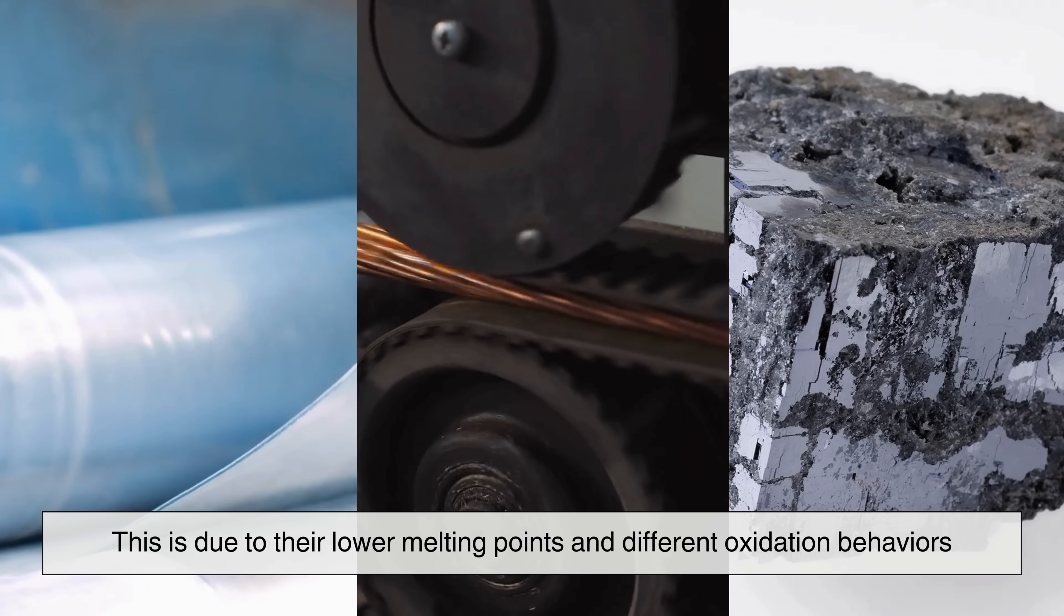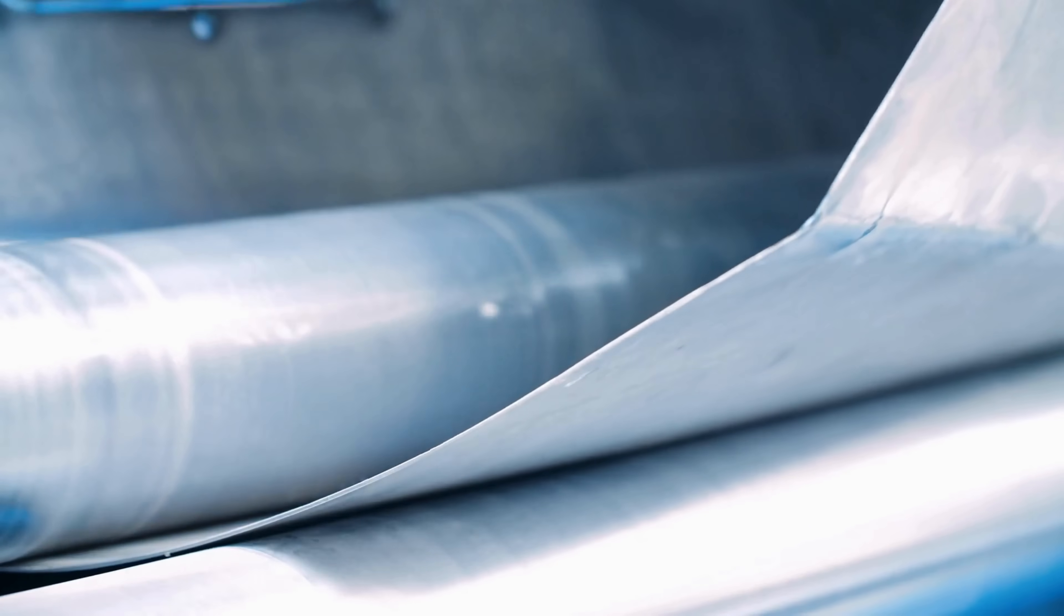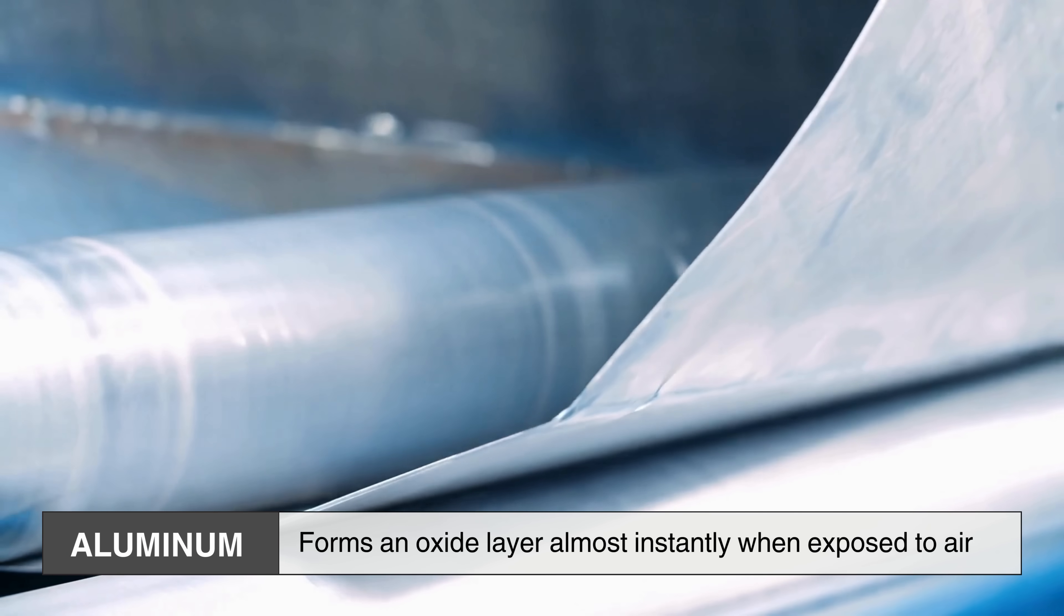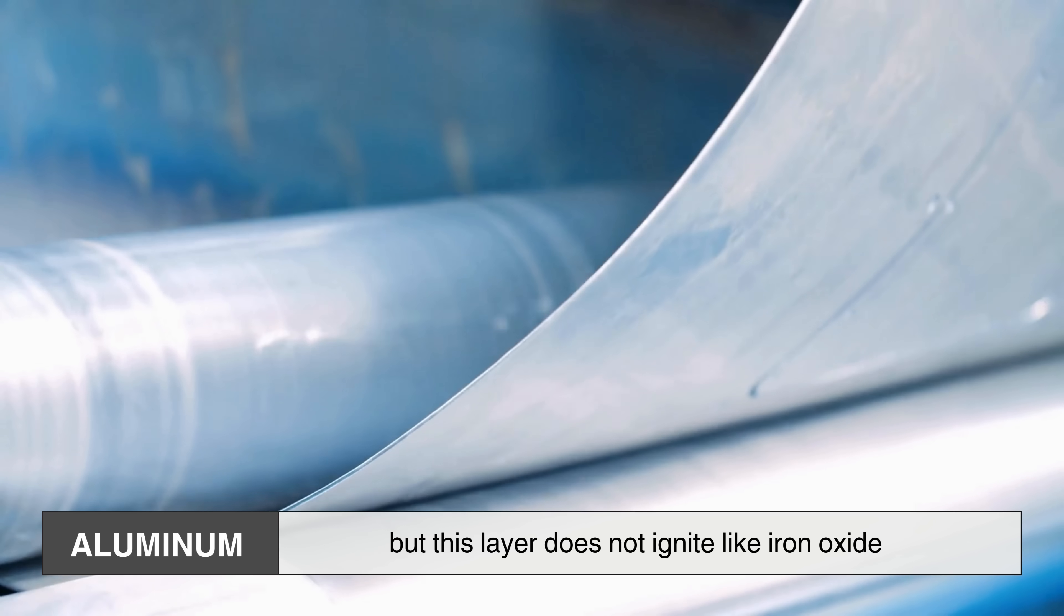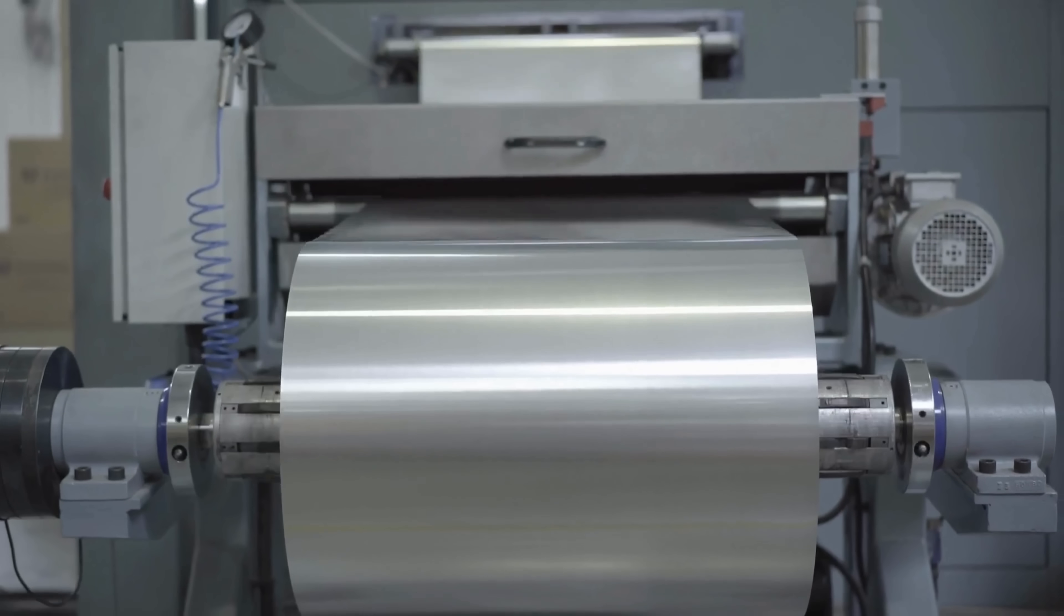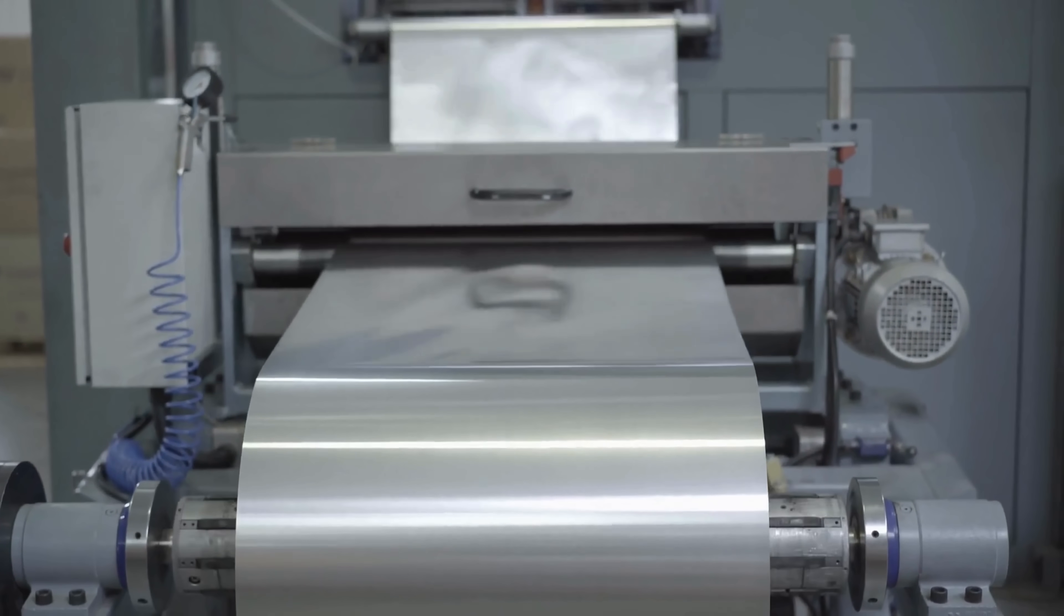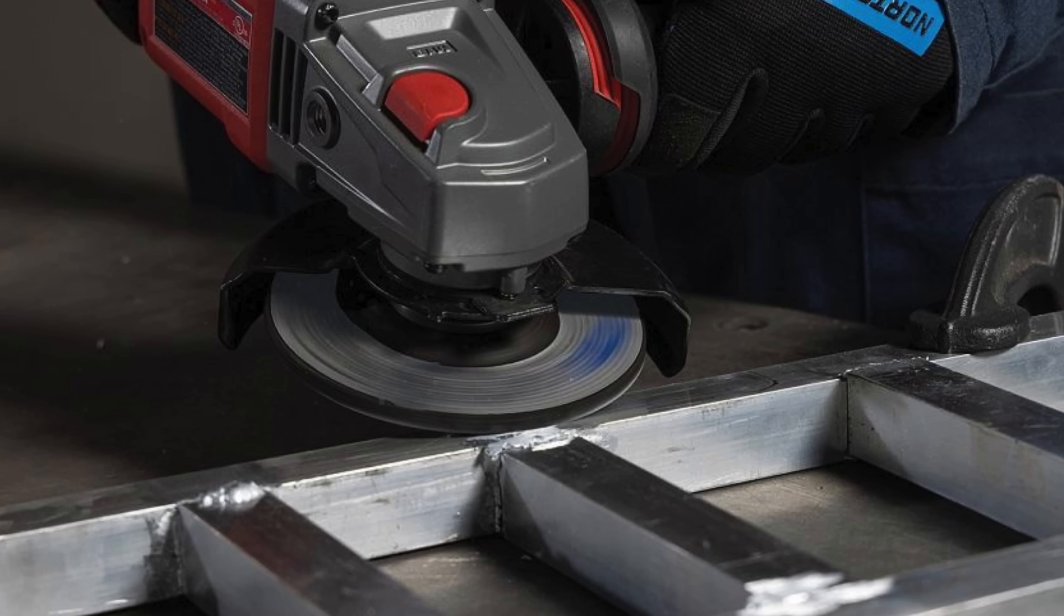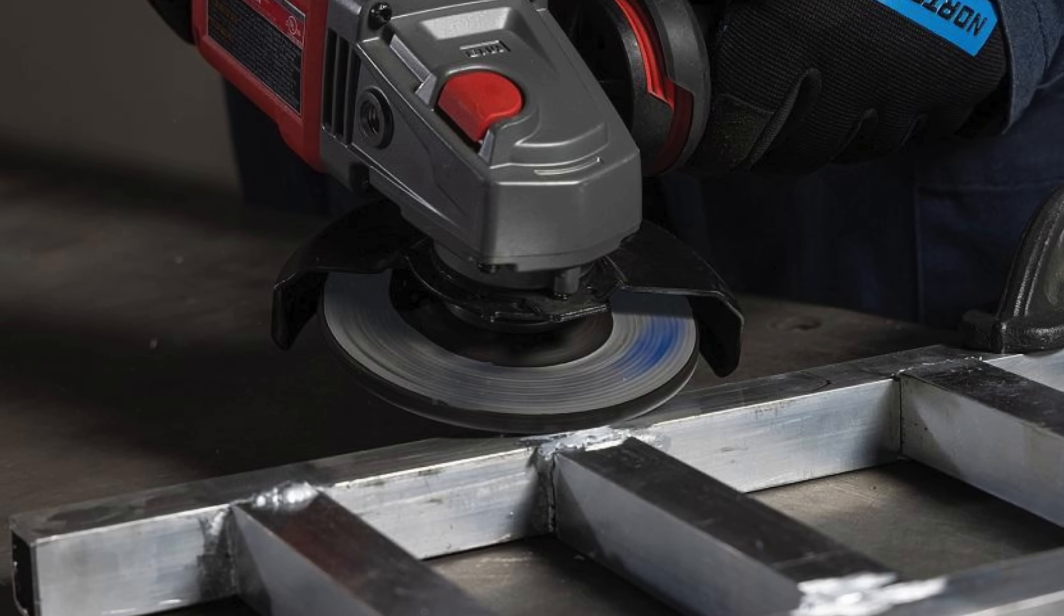This is due to their lower melting points and different oxidation behaviors. Aluminum, for instance, forms an oxide layer almost instantly when exposed to air, but this layer does not ignite like iron oxide. Additionally, aluminum conducts heat very efficiently, preventing the localized overheating that occurs with iron and steel. This explains why grinding aluminum results in a dull, smeary effect rather than a fiery shower of sparks.